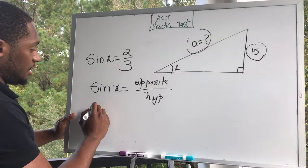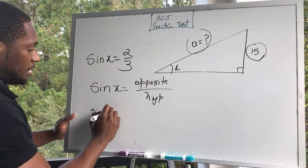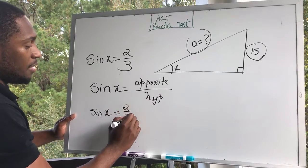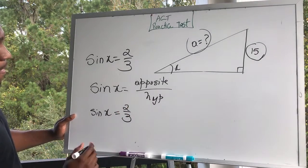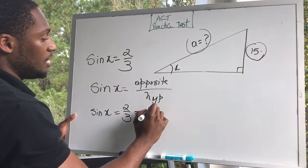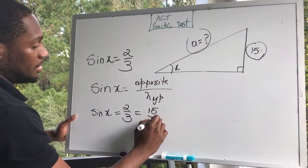So we have sine of x, opposite divided by hypotenuse, which is two-thirds. Sine of x is two-thirds, is the opposite side, 15, divided by hypotenuse which is a.